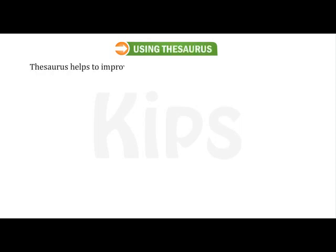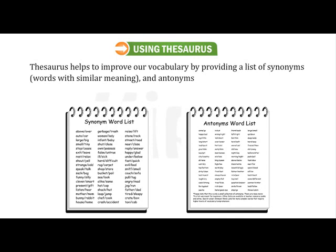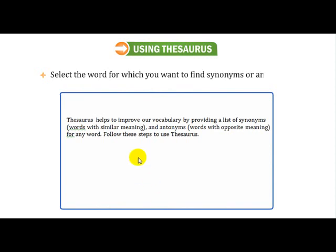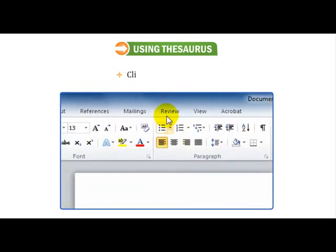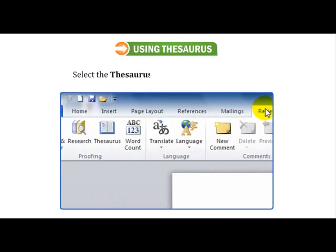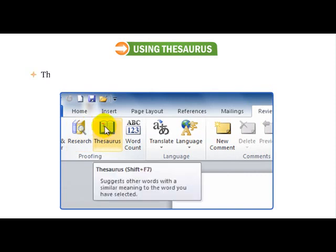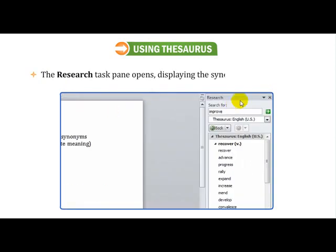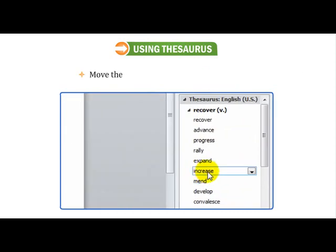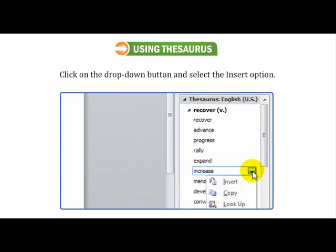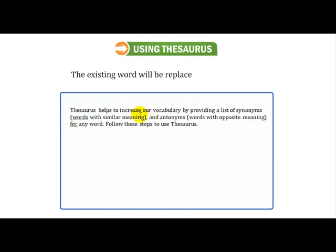Students, let us talk about using the Thesaurus. Thesaurus helps to improve our vocabulary by providing a list of synonyms — words with similar meaning — and antonyms — words with opposite meaning — for any word. Follow these steps: select the word for which you want to find synonyms or antonyms. Click on the Review tab and select the Thesaurus option in the Proofing group. The Research Task Pane opens displaying the synonyms and antonyms. Move the mouse pointer to the suitable word, click the drop-down button, and select the Insert option. The existing word will be replaced with the new one.